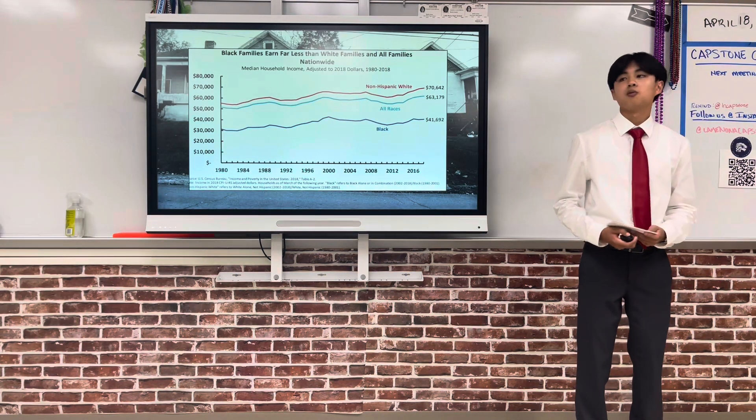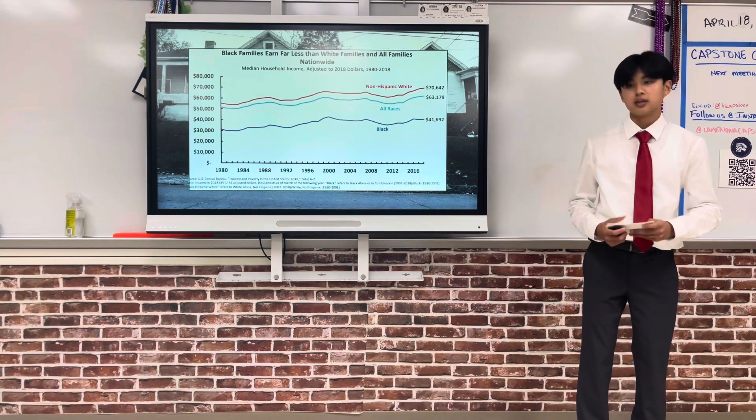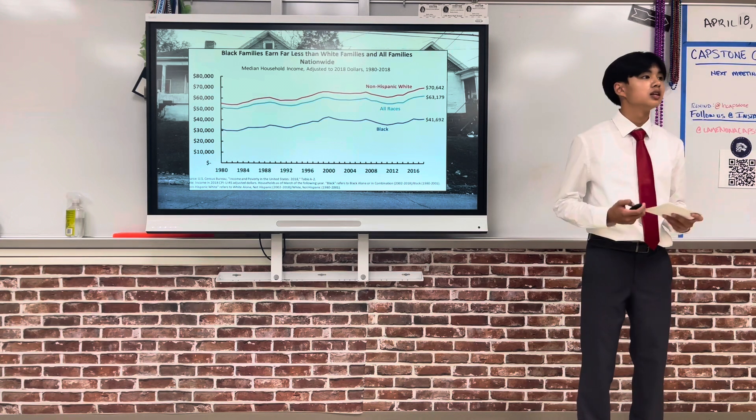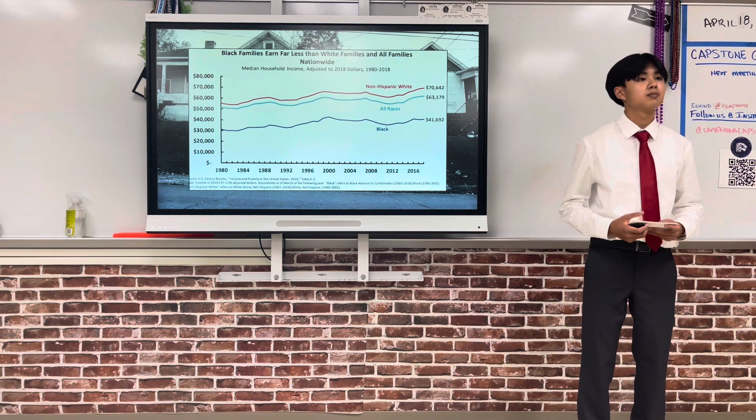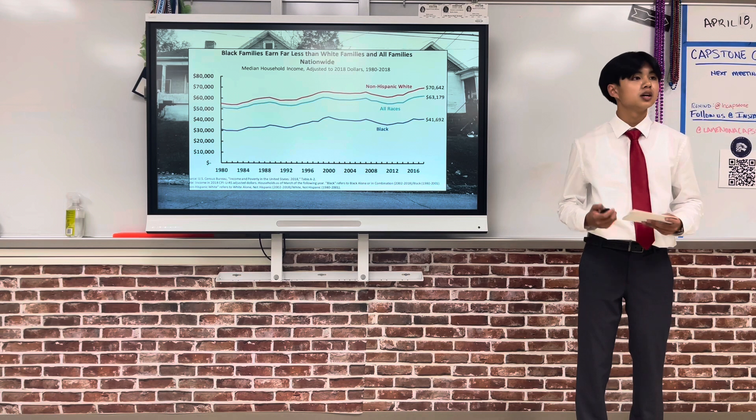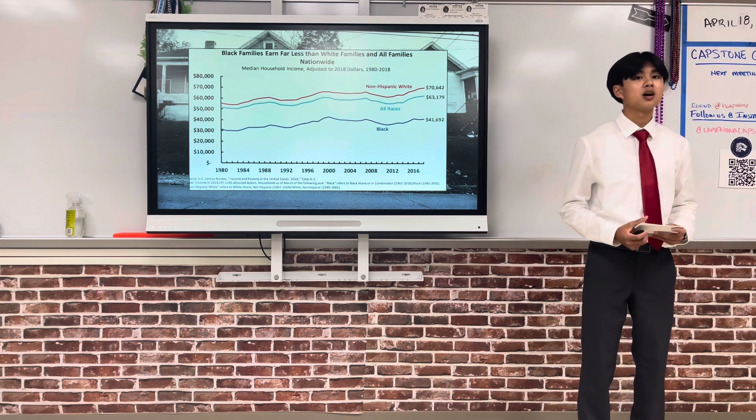As illustrated in this report by the United States Joint Economic Committee, African American families have a significantly lower income than other ethnicities present in the United States, making just above half of what white Americans make annually.